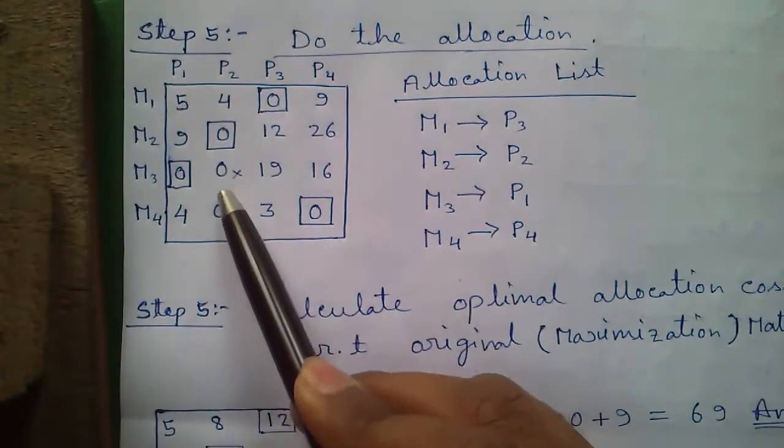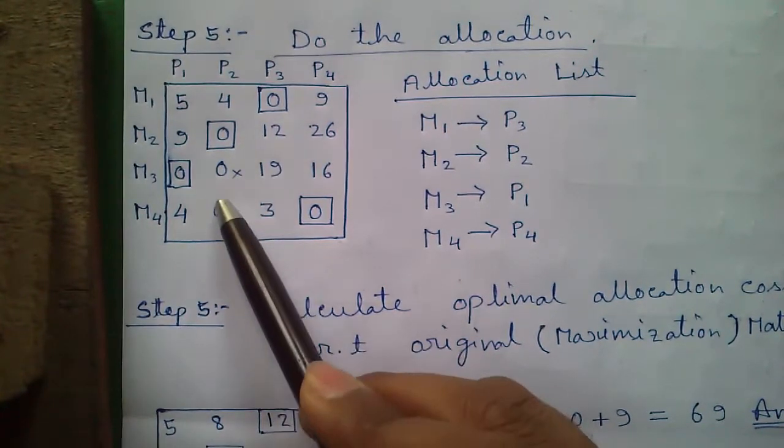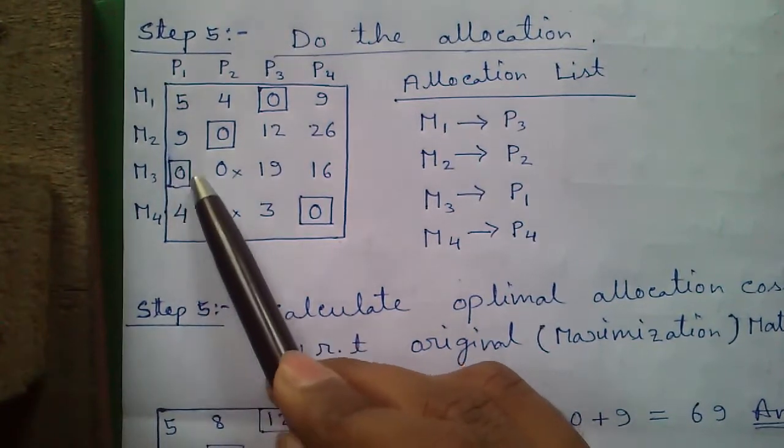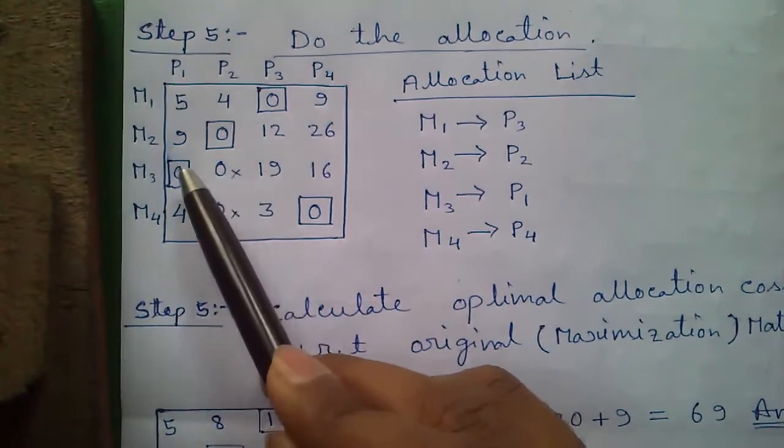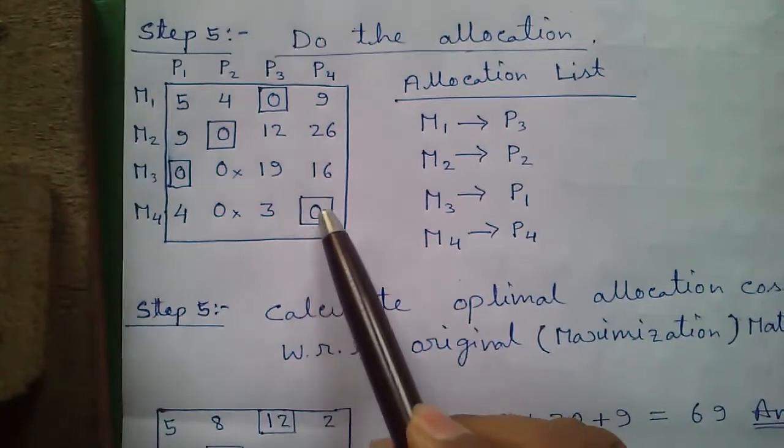So here we have a single zero. We will allocate here and scan for zeros. In column wise we have two zeros, so we will cross them. Crossing means these zeros cannot be allocated elsewhere. Next our third allocation because we have single zero here. This zero is already crossed. So third allocation is done. We have only one zero left, so our fourth allocation will be done here.